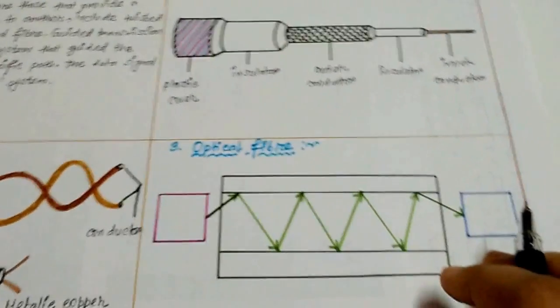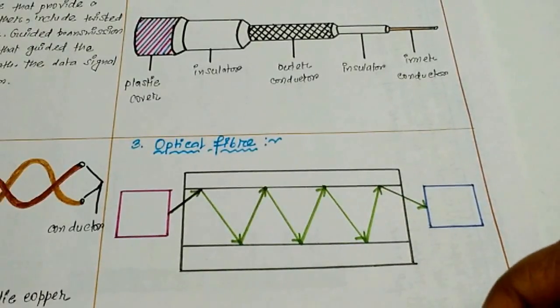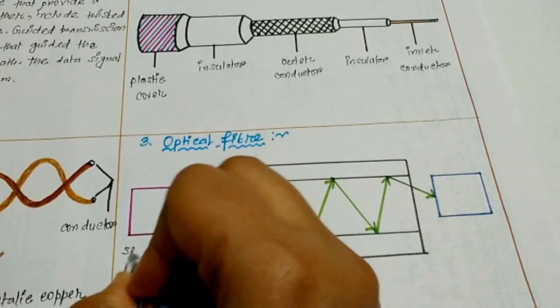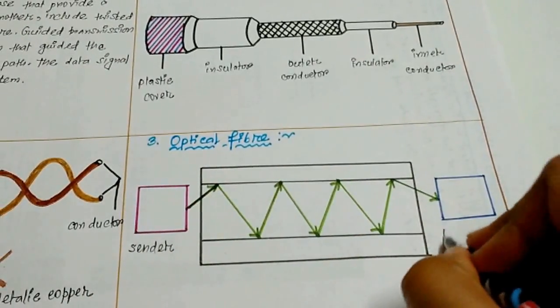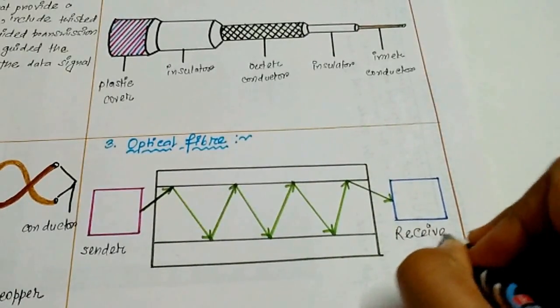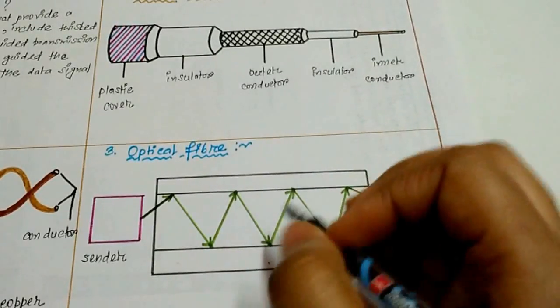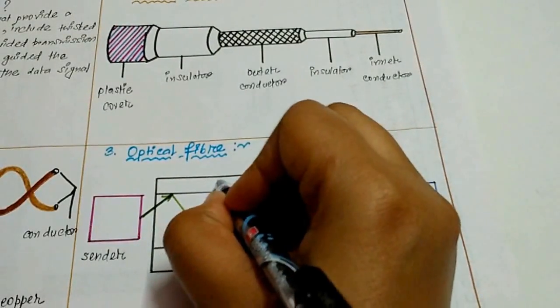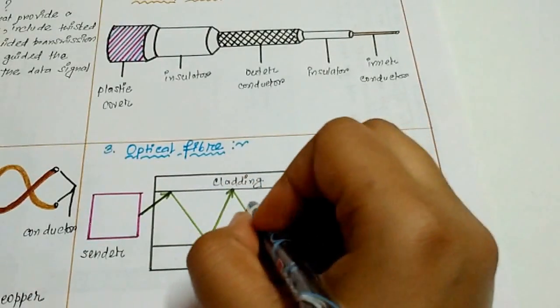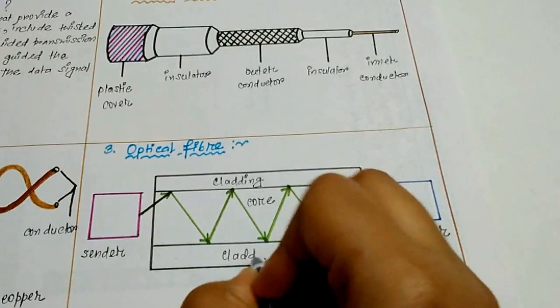Now I am going to discuss optical fiber. This is the diagram of optical fiber. Here is the sender and this is the receiver. These places are known as cladding, this is the core, and this is also cladding.